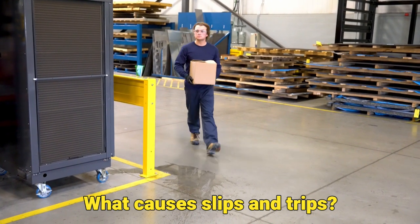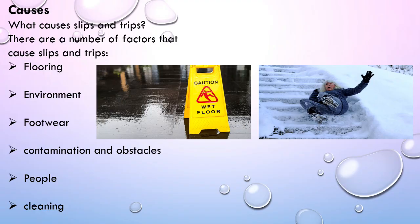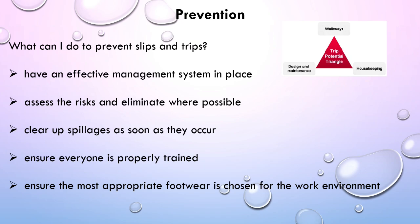The causes of slips and trips include a number of factors: flooring environment, footwear, contamination, obstacles, and cleaning. For prevention, you must have an effective management system in place, assess the risks and eliminate where possible, clear up spillages as soon as they occur, ensure everyone is properly trained, and make sure the most appropriate footwear is chosen for the work environment.